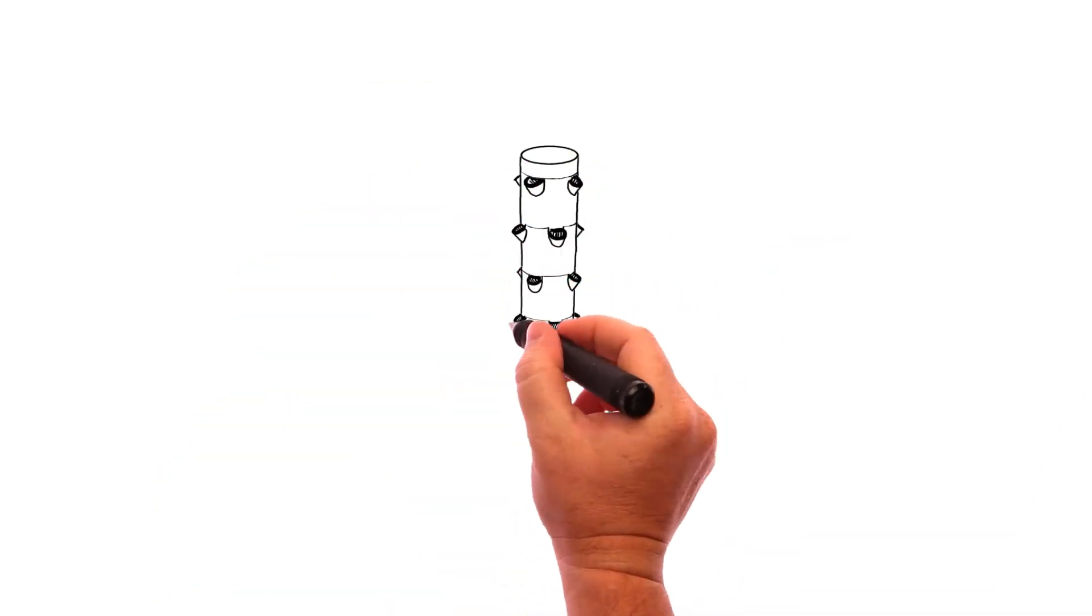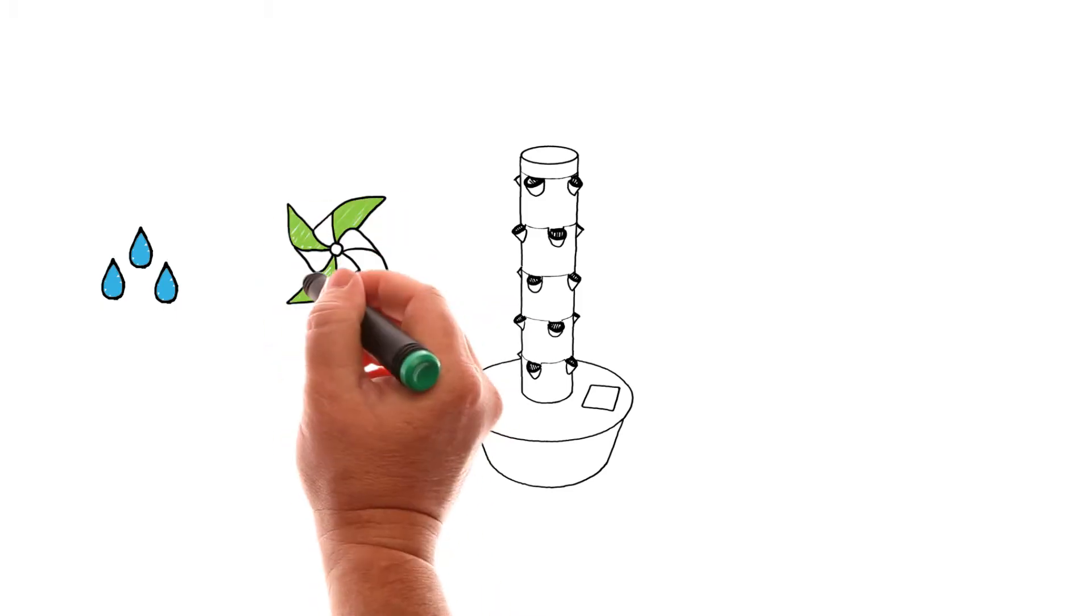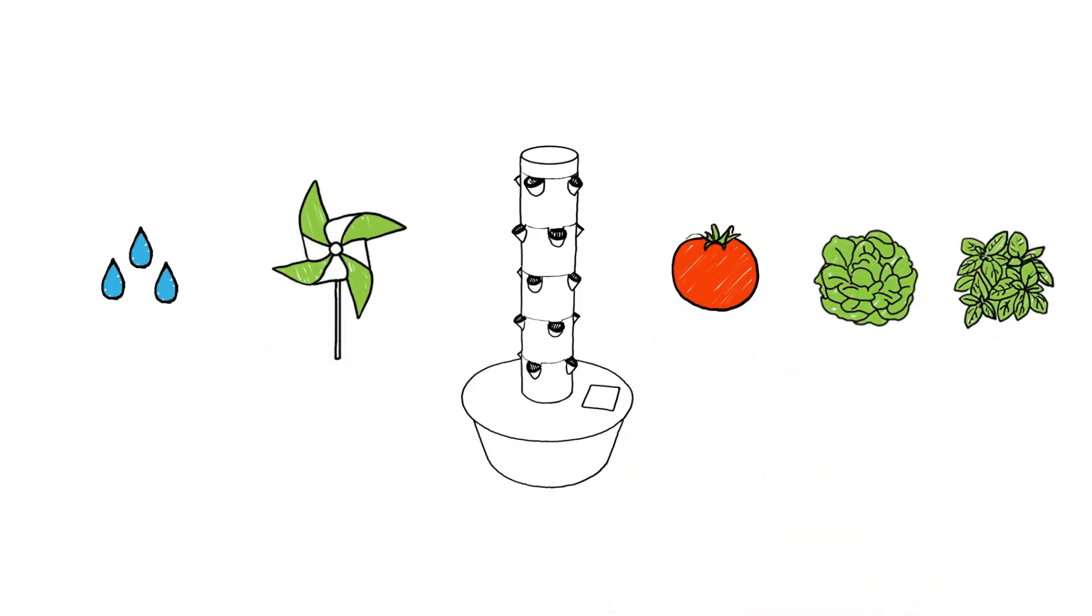Tower Garden's state-of-the-art aeroponic vertical garden system uses both water and air to produce more colorful, better tasting, and incredibly nutritious fruits, vegetables, and herbs.